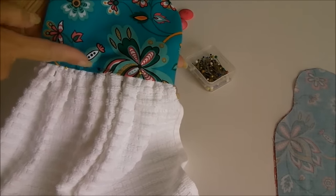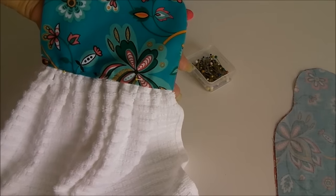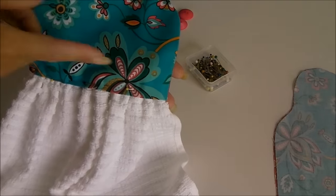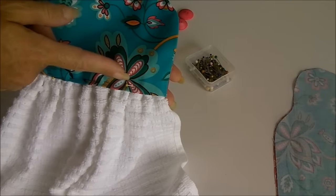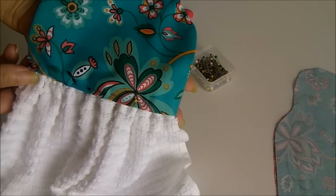So sew reasonably close to the edge, say around a quarter of an inch from this folded over edge. And then for security, I'm going to sew a second line of stitching just above that too. So I'll go and do mine and then we'll go and see what that looks like.